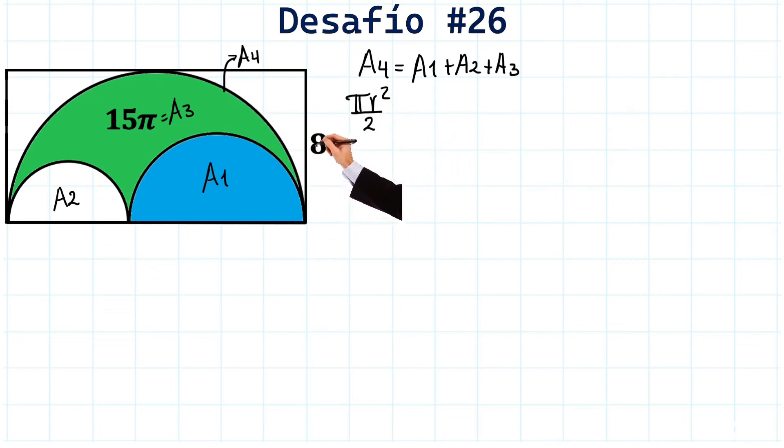The radius is 8 because it is the height of the rectangle. Since it reaches from this point to this point here, very well. So, we can replace here with 8. Excellent.